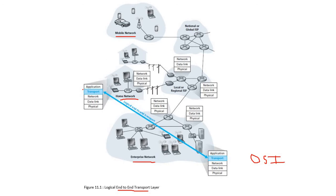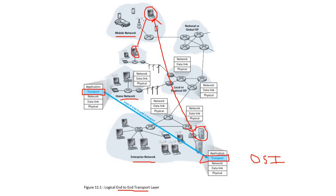Let's see in detail how the transport layer communicates from one end to another. The basic structure includes end devices located at the boundary of a network - either wireless or wired end systems. Both can be clients, and some powerful systems can also act as servers. We have discussed client-server architecture as well as peer-to-peer architecture.